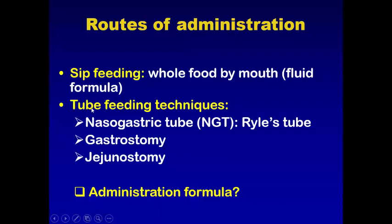Or through tube feeding. Tube feeding techniques include: a nasogastric tube, which enters through the nose into the stomach; a gastrostomy tube, which enters directly into the stomach from the skin; and a jejunostomy tube, which enters directly from the outside through the abdomen into the jejunum.